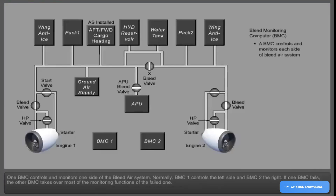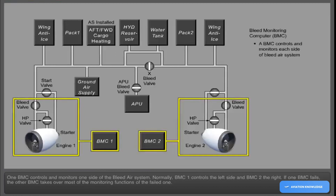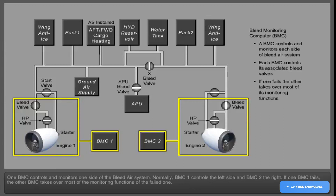One bleed monitoring computer controls and monitors one side of the bleed air system. Normally, BMC 1 controls the left side and BMC 2 the right. If one BMC fails, the other BMC takes over most of the monitoring functions of the failed one.